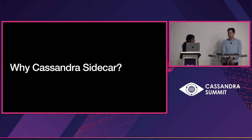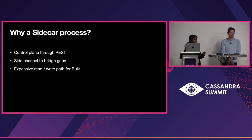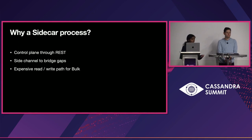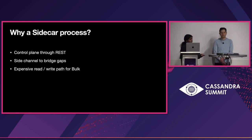Cassandra clusters are generally hard to operate. We need various automation tools for maintaining the cluster — for example, maintenance tools for restarting clusters and migration tools for moving data from one cluster to another. We also need execution tools for executing commands in bulk in Cassandra.